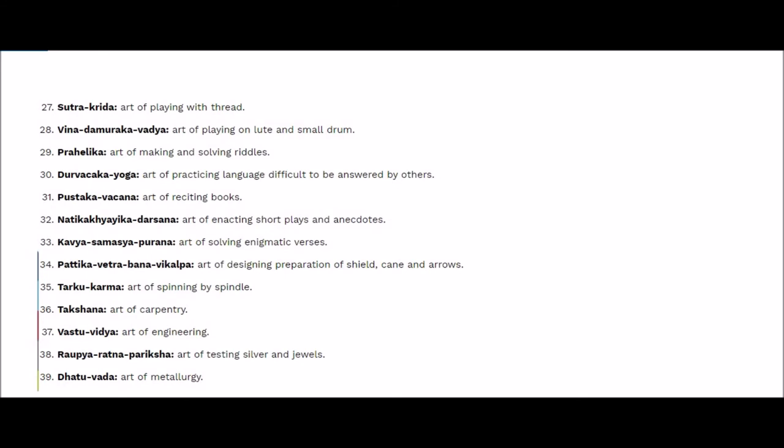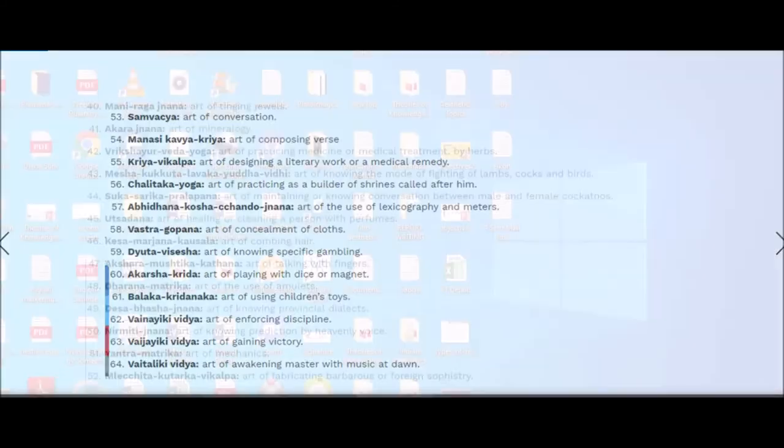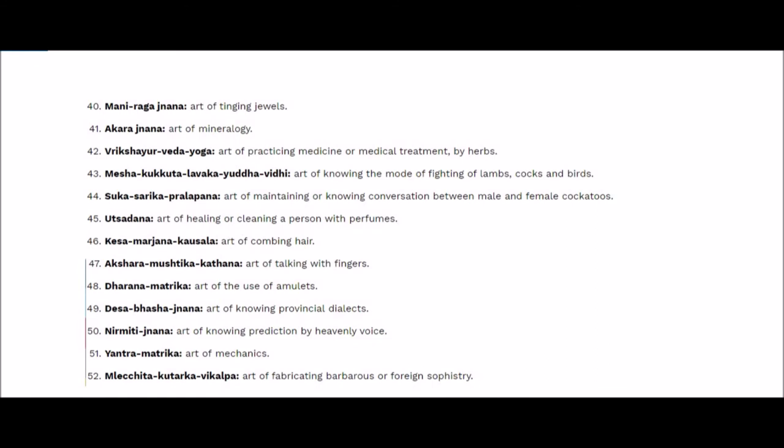Raupia Ratna Pariksha is the art of testing silver and other jewelry. There is a special trick by which a jewelry person can know whether an ornament brought to sell or keep on loan is authentic. Similarly, Dhatu Vada, the medical art of metallurgy — people have taken a lot of pain to understand this. Then Mani Raga Jnana, the art of tinging jewels.